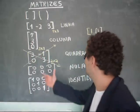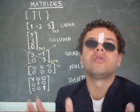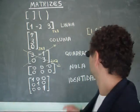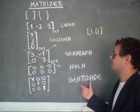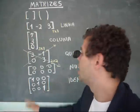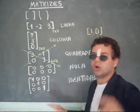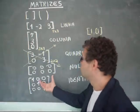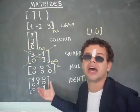E quando eu tenho uma matriz nula, todos os elementos iguais a zero. E quando eu tenho uma matriz identidade? É uma matriz quadrada, onde a diagonal principal, todos os elementos, é igual a um e o restante tudo é zero.